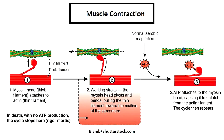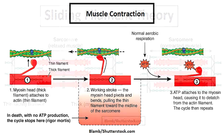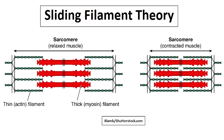During muscle contraction, thick myosin filaments located within the sarcomere bend and the knobby head part attaches to the thin actin filaments and slides them toward the middle of the sarcomere. This sliding of filaments causes the sarcomere to shorten or contract. As this takes place all along the sarcomeres within that myofibril, the entire muscle fiber contracts, which causes the entire muscle organ to shorten or contract.